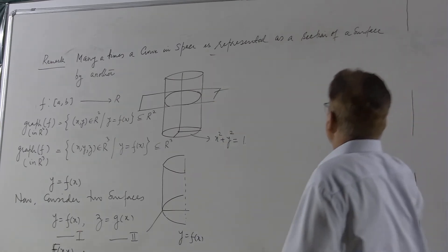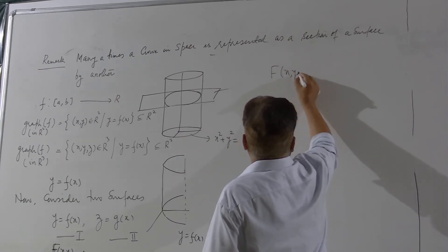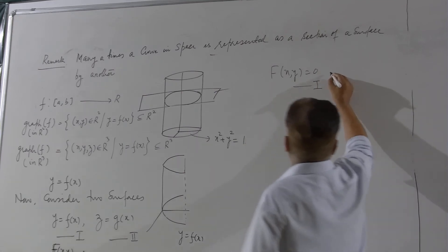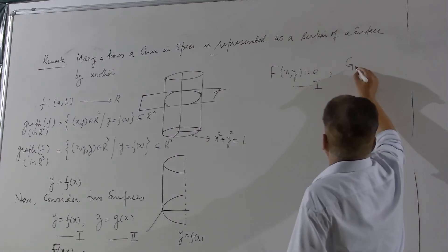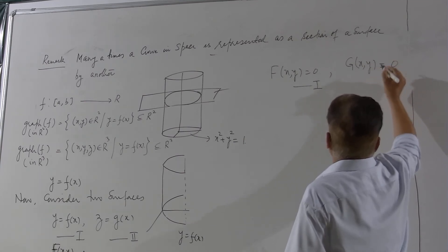Equation number 1 sometime is also written as some F(x,y) = 0 and this is implicit form of equation 1, and implicit form of the second equation will be G(x,z) = 0.